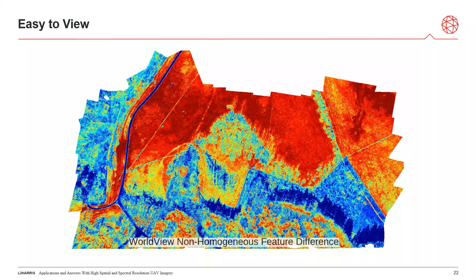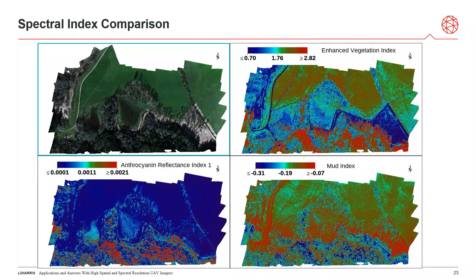After going through all 48 spectral indices, let's take a look at three in particular. On the top left is the true color image. Directly right of that is the Enhanced Vegetation Index (EVI), used to pick out different vegetation responses — we're getting a very large response from some of the trees and the grassy area. On the bottom left is the anthocyanin index — anthocyanin is common in plants that are blue, red, or purple, so this responds higher for those colors. On the right is the mud index, where the road and many grassy areas as well as the ground area are responding higher, showing more of a ground response.